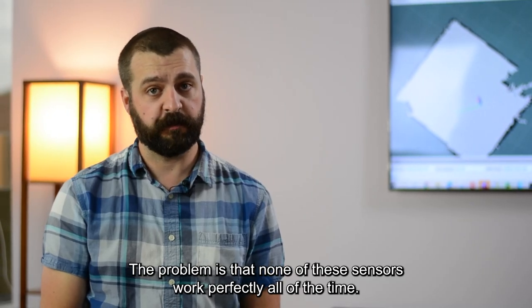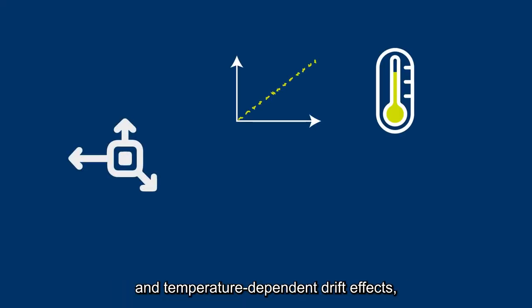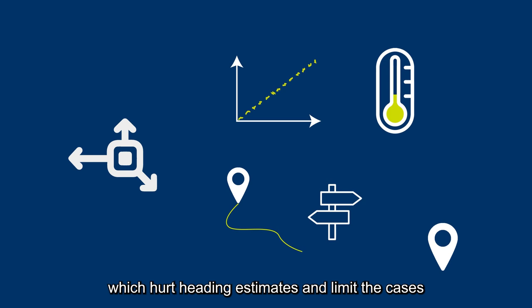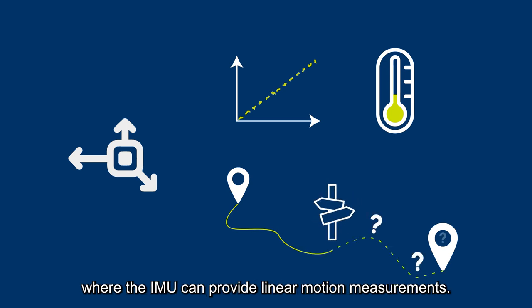The problem is that none of these sensors work perfectly all the time. Consumer-grade IMUs have noisy accelerometers and temperature-dependent drift effects, which hurt heading estimates and limit the cases where the IMU can provide linear motion measurements.